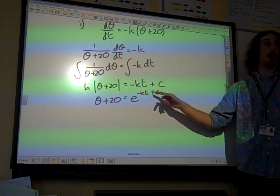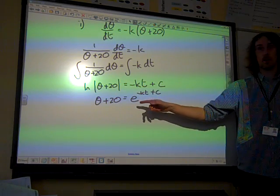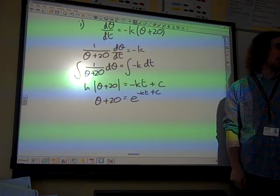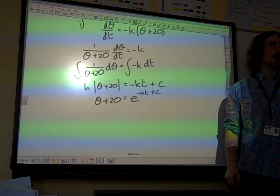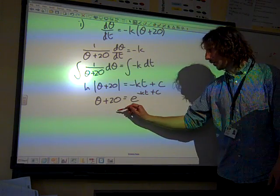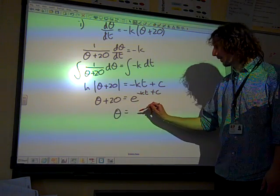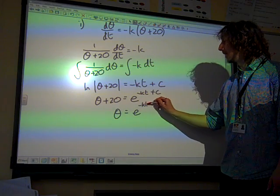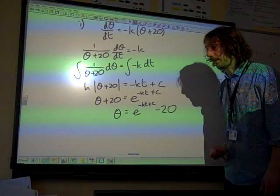Remember that the c is part of the power there, isn't it? Because all of that has been raised as the power of e. So a correct answer would be θ = e^(-kt + c) - 20.